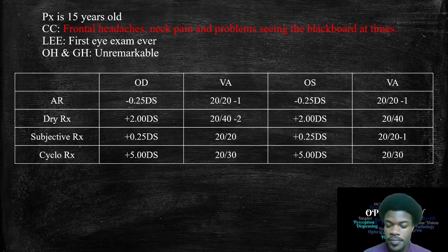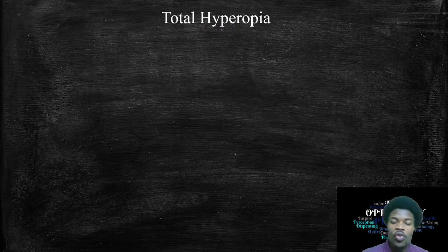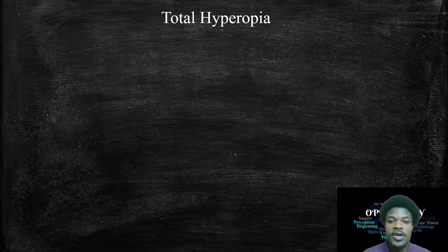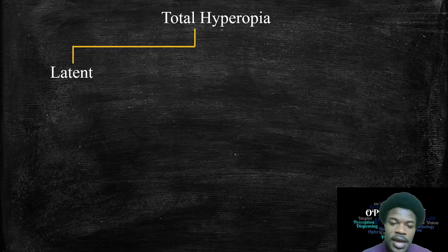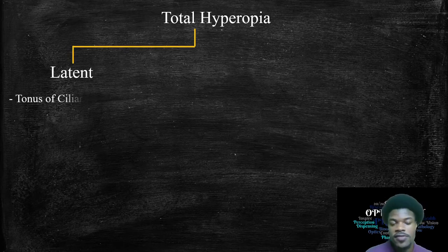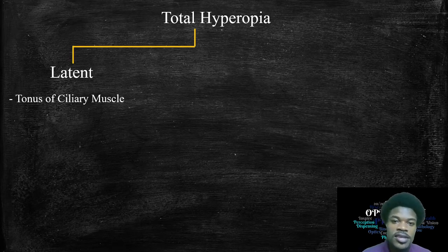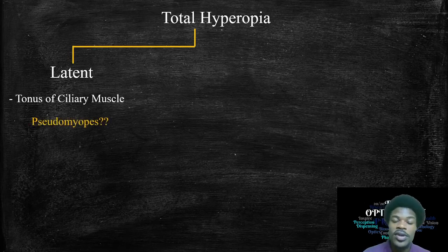Overall, we have something called total hyperopia — the total amount of hyperopia in the visual system — and this is fully revealed through cycloplegic refraction, where you paralyze the ciliary muscle so the lens can't accommodate. Total hyperopia is made up of two types. First, latent hyperopia, which comes from the tonus of the ciliary muscle at its resting state. The resting state of the ciliary muscle still has some accommodation; sometimes it's more than necessary. This latent hyperopia is also linked to pseudomyopia.